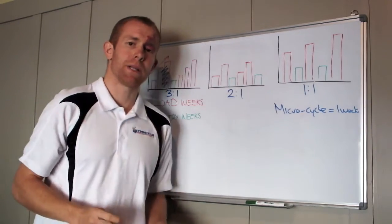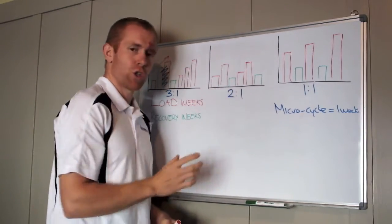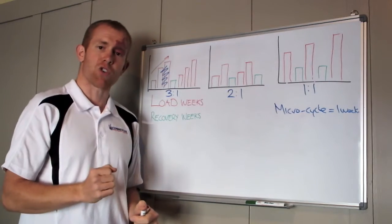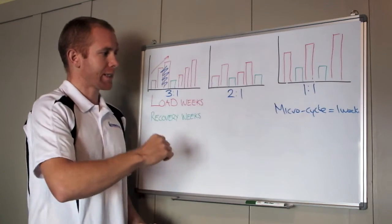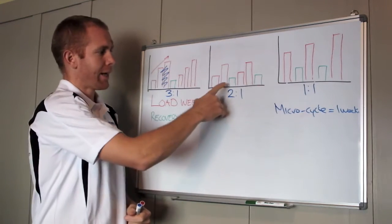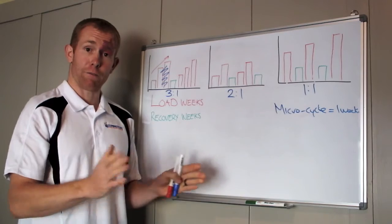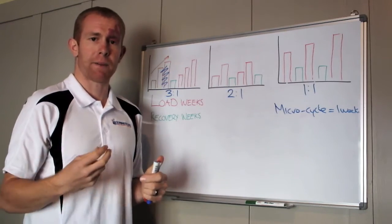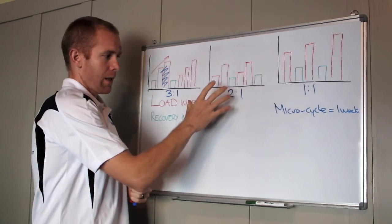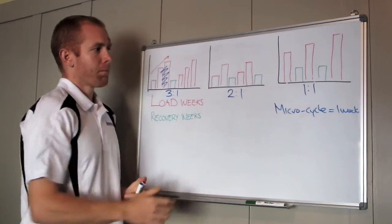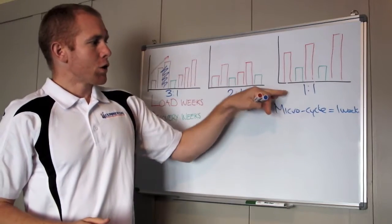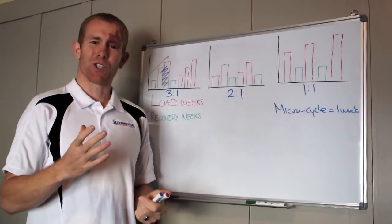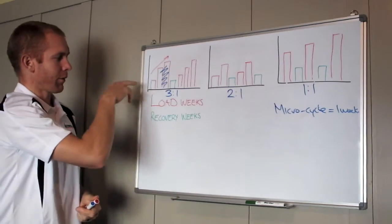I'd say the two to one was the most common or most used by busy working people who are also trying to train. You've got two load weeks, one recovery week, and often this recovery week doesn't have to be a full week. Often within five days the person's bounced back enough to get back into it, so this here is often really good.